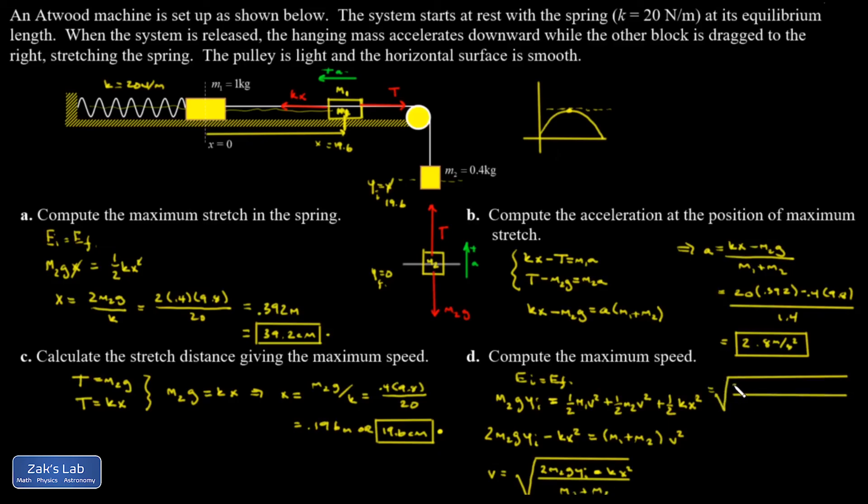Plugging in numbers, I end up with 2 times 0.4 times 9.8 times 0.196 for y initial minus 20 for k times 0.196 squared divided by the total mass, which was 1.4. And I get 0.741, just keeping three sig figs, meters per second.